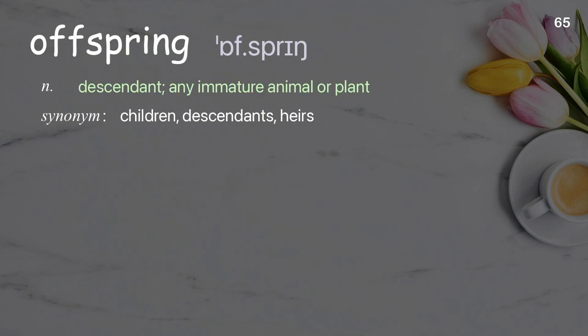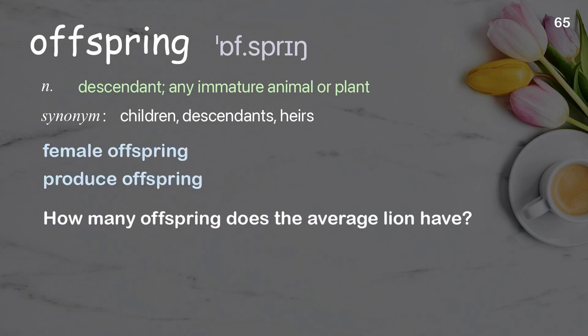Offspring: descendant; any immature animal or plant. Examples: female offspring, produce offspring. How many offspring does the average lion have?